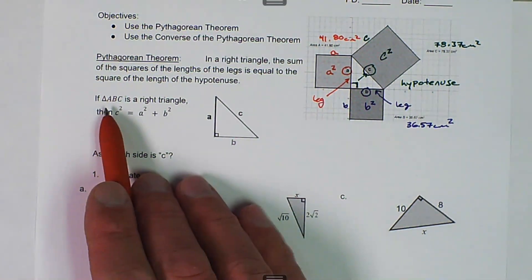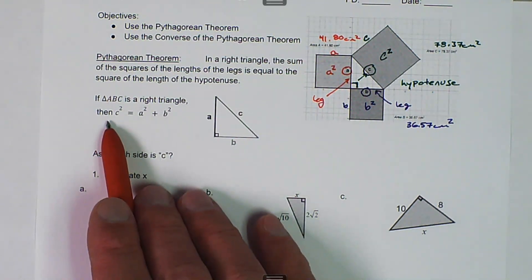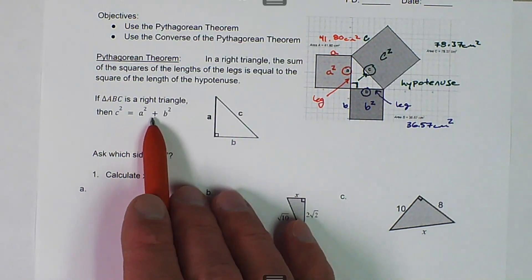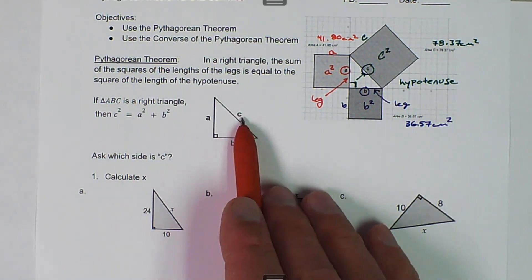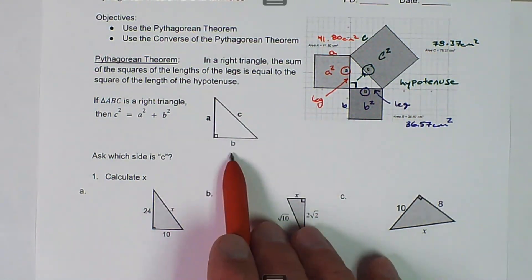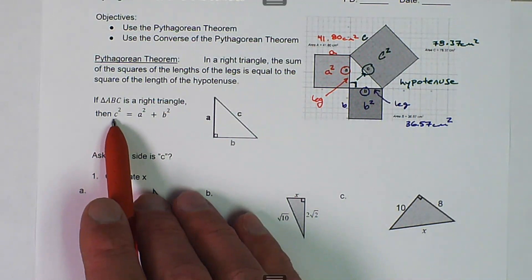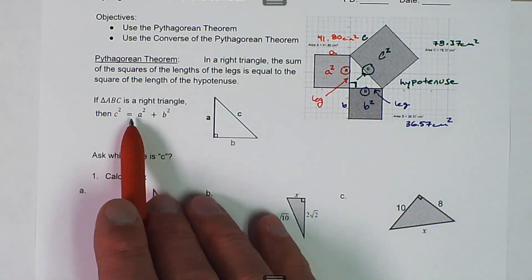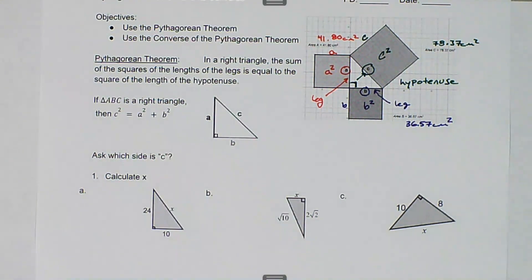Next, if triangle ABC is a right triangle, then C squared is equal to A squared plus B squared. The side opposite the right angle is the hypotenuse. The hypotenuse is always the larger side, and it stands by itself on one side of the equation, while the two legs are added together on the other side.